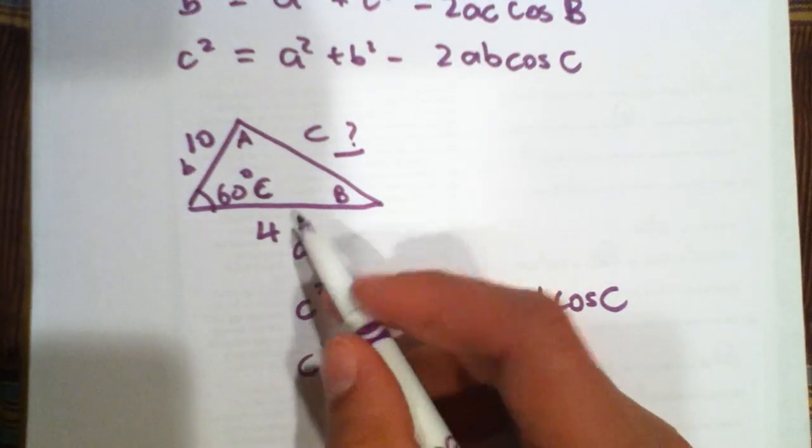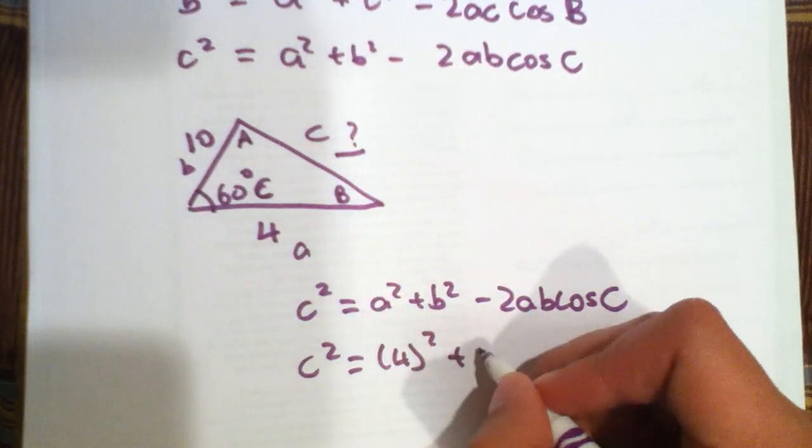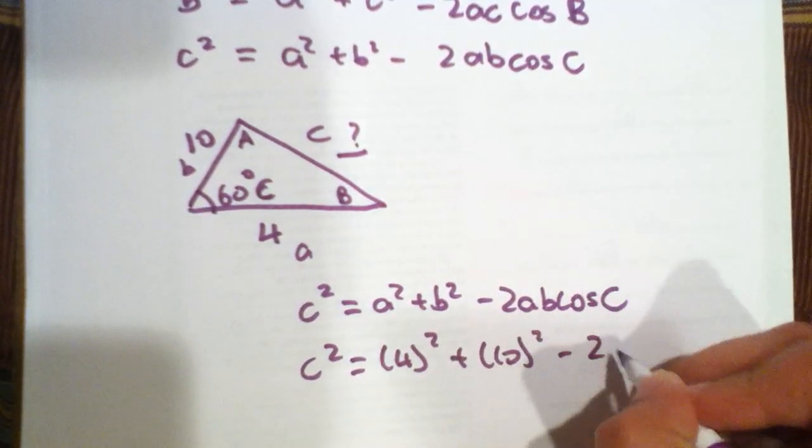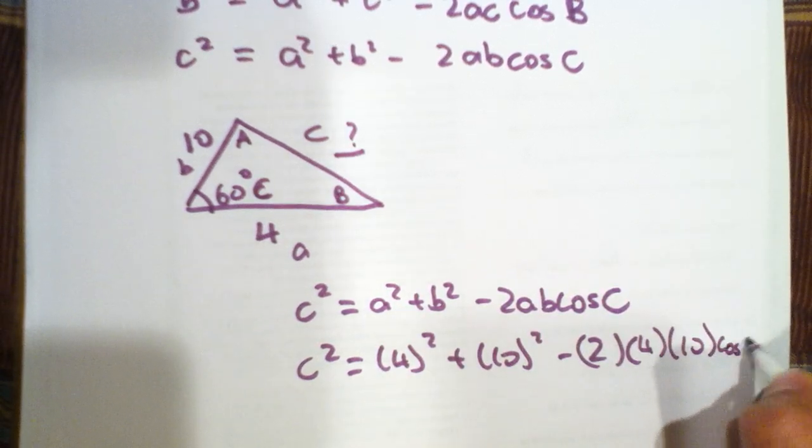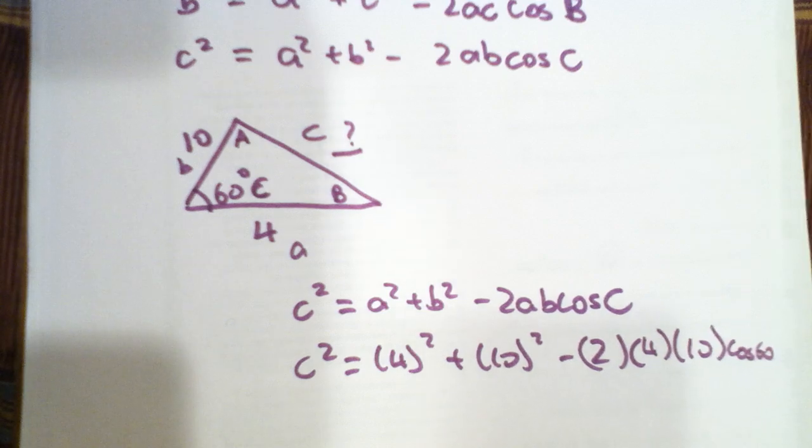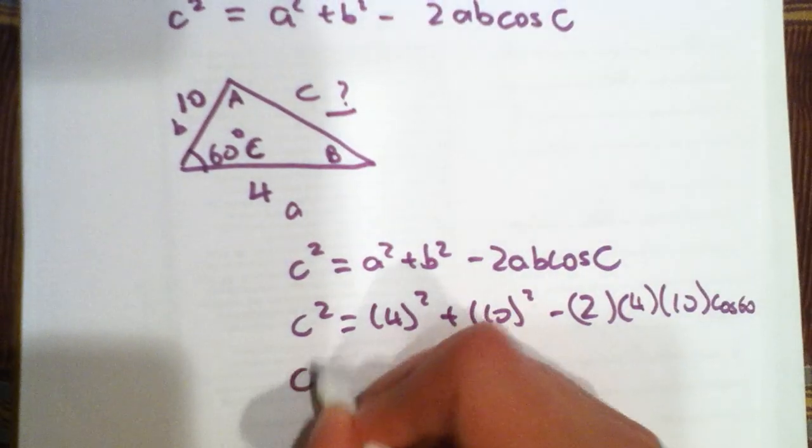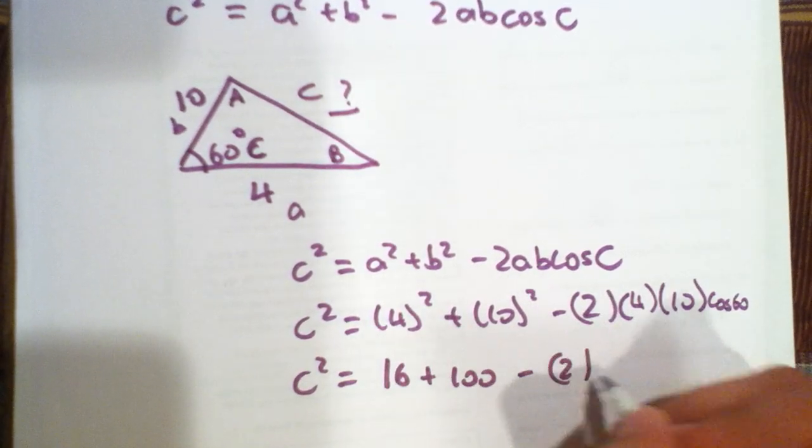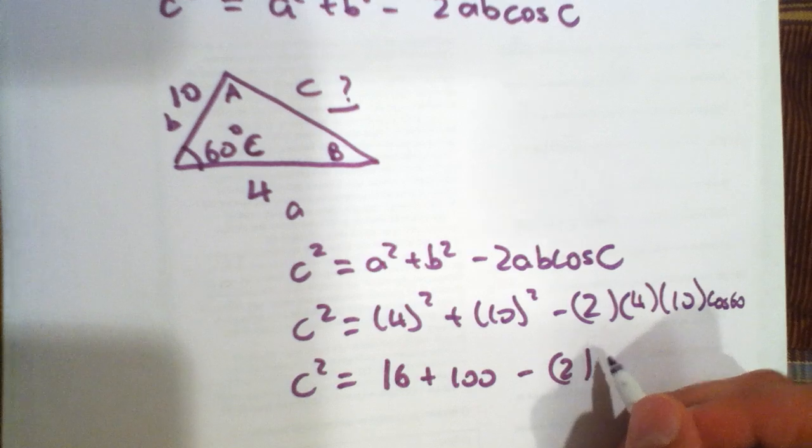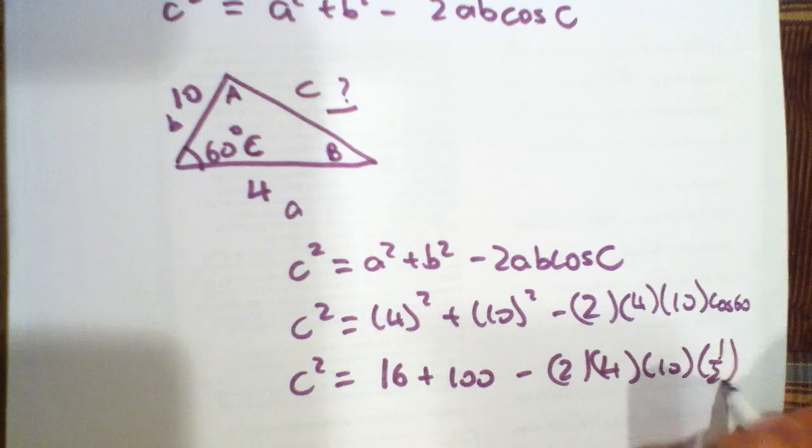C squared is equal to A squared is four squared plus B squared is ten squared minus two times four times ten times cosine of sixty. C squared is equal to sixteen plus one hundred minus two times four times ten, and cosine of sixty is actually one-half.